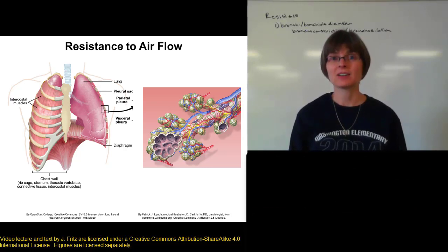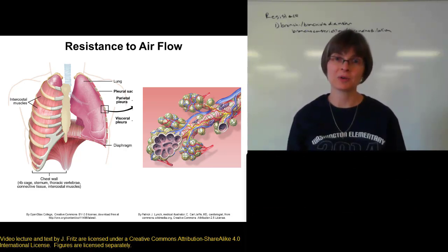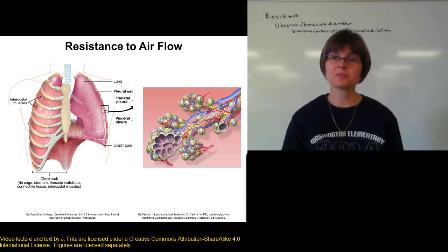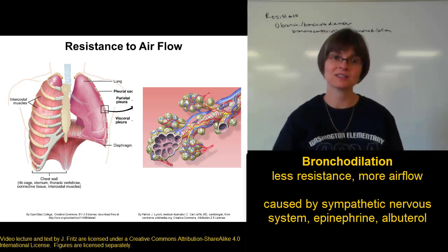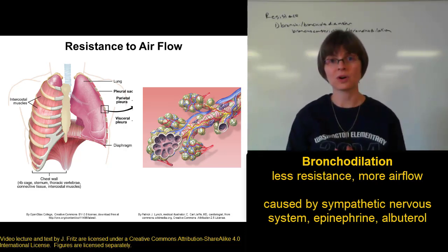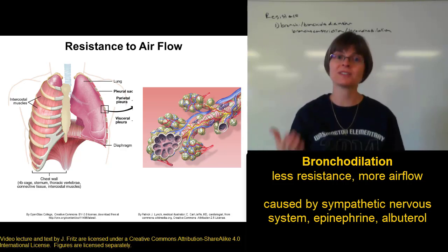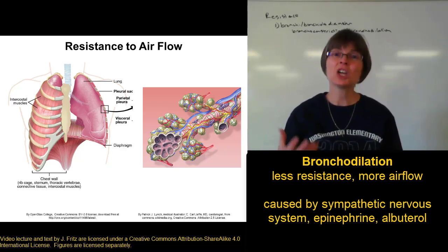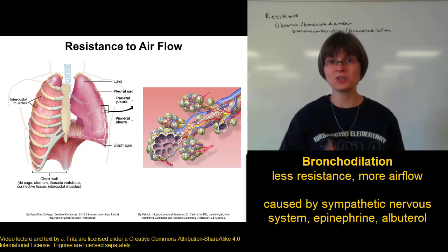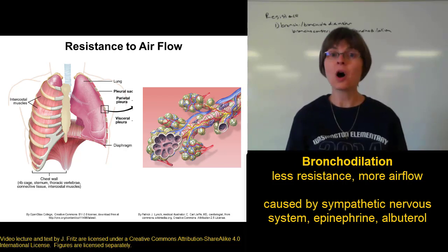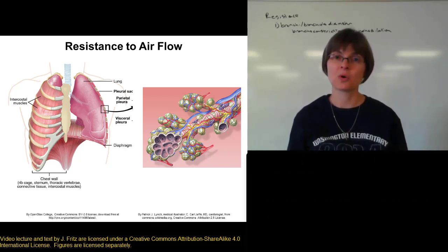There are many factors that affect the smooth muscle controlling airway diameter. One important factor is the sympathetic nervous system, which causes bronchodilation — sympathetic neurons signal the smooth muscle around the airways to relax and allow those airways to dilate. The sympathetic nervous system is associated with increased activity, and increased activity requires increased air flow, which means reduced resistance through dilated airways. Epinephrine, the hormone, also has an effect that dilates the airways.